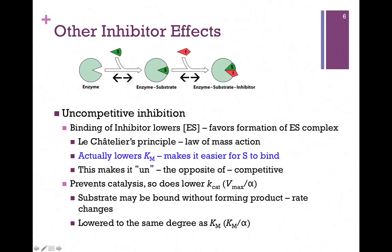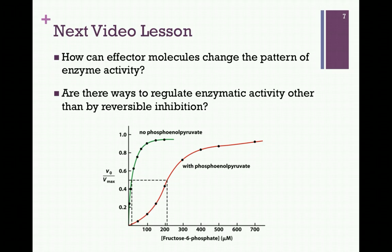However, we still have the unproductive ESI complex, so as long as the inhibitor is bound, less substrate is converted to product and Kcat or Vmax decreases. In uncompetitive inhibition, both Vmax and Km decrease to the same degree — the same factor alpha. In our next video lesson, we'll look at how effector molecules can change the pattern of enzyme activity and explore other ways to regulate enzyme activity beyond reversible inhibition.